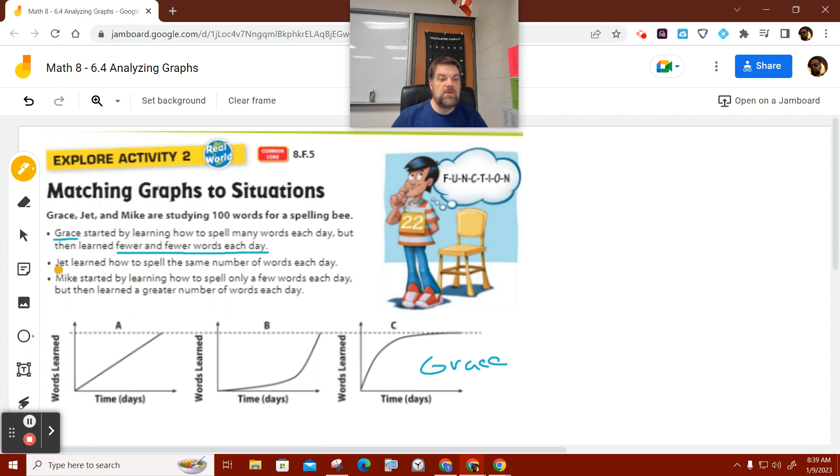Let's do Jet. Jet learned the same number of words each day. Which one's Jet? A. A. Constant rate of change, right? Does that make sense?